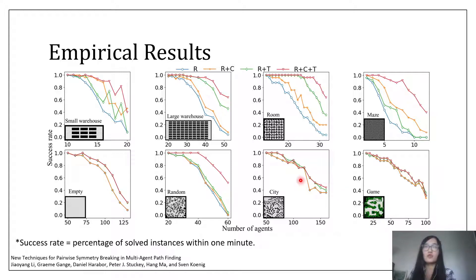Here we show some empirical results. The x-axis is the number of agents, and the y-axis is the success rate. R is rectangle symmetry, which is our baseline algorithm. C and T are corridor and target symmetry. You can see that in different domains, the improvement of corridor symmetry and target symmetry is different. But overall, they both improve the performance, and the combination of them always performs the best.